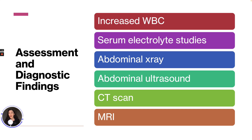For assessment and diagnostic findings, we will see an increased white blood cell count. Serum electrolytes may reveal elevated levels of potassium, sodium, and chloride. An abdominal x-ray may show air or fluid levels as well as distended bowel loops. Abdominal ultrasounds can reveal abscesses and fluid collection. A CT scan can reveal abscess formation, and an MRI can be used to diagnose an intra-abdominal abscess.